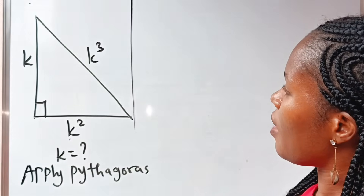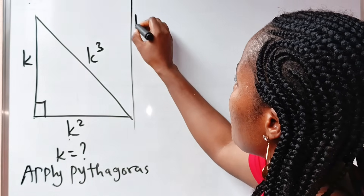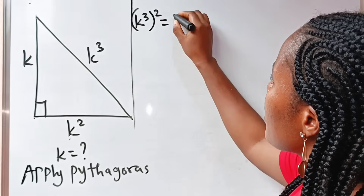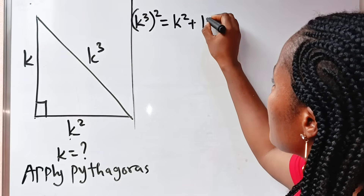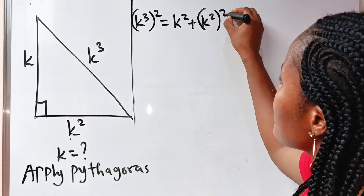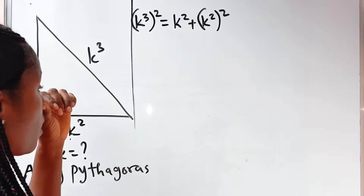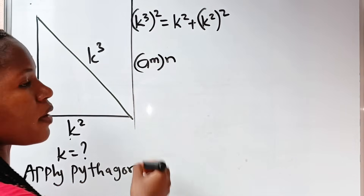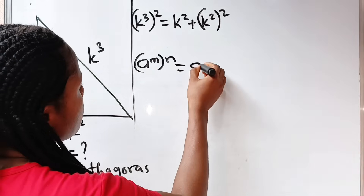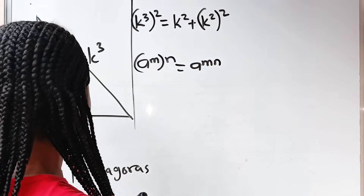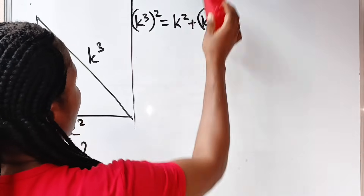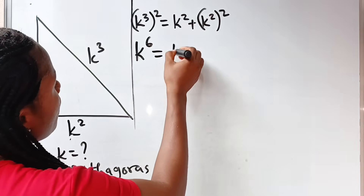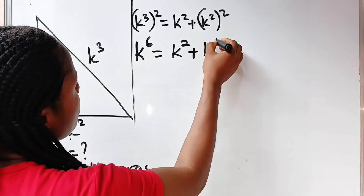So that means our hypotenuse here is K. We have K to the power of 3, squared, is equal to K squared squared plus K squared squared. When you have A to the power of M raised to the power of N, it equals A to the power of M times N. That means we have K to the power of 6 is equal to K to the power of 2 plus K to the power of 4.